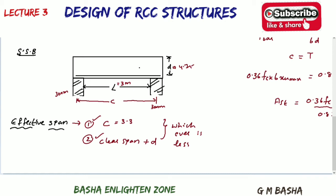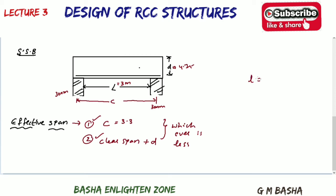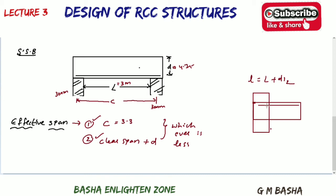For a cantilever beam, there is only one condition: effective span equals clear span plus d/2, where d is half the depth of the support. This gives the effective span for designing cantilever members.